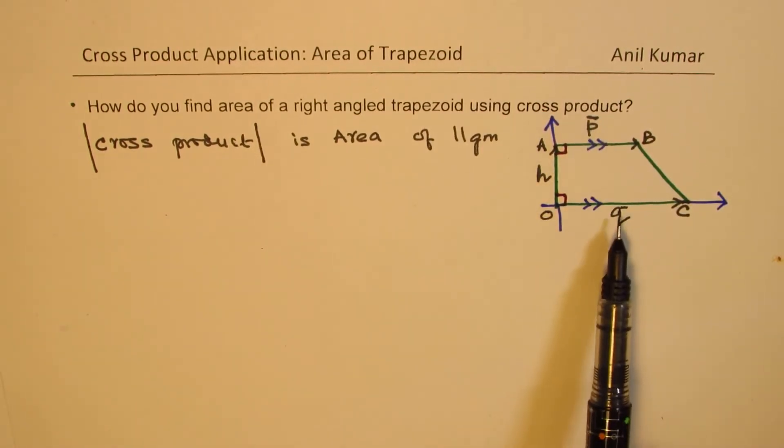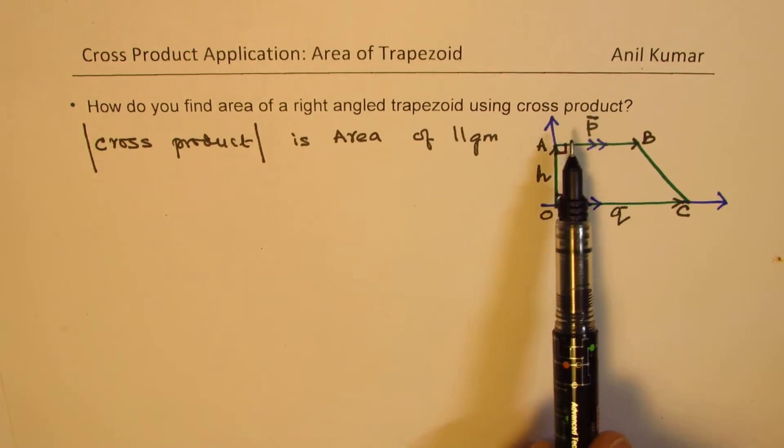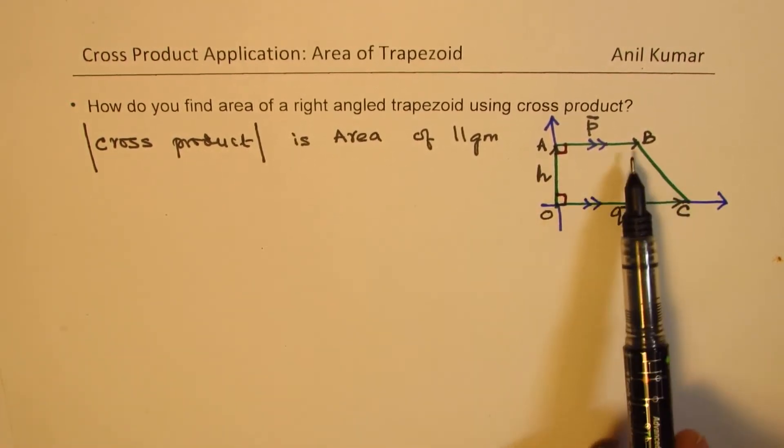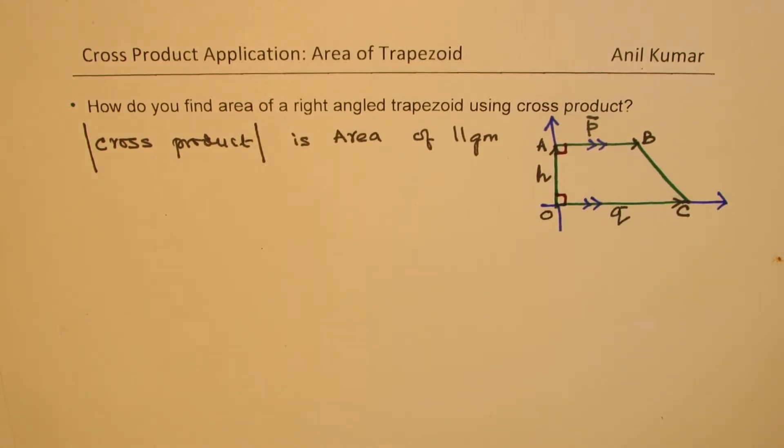So, vector P is parallel to vector Q and we have assumed it to be shorter than Q. It could be longer, but as shown, we will assume this to be short.